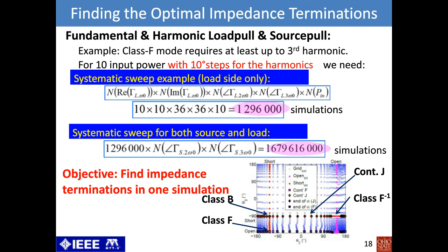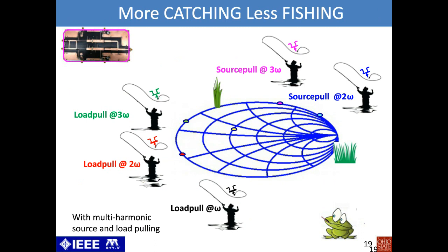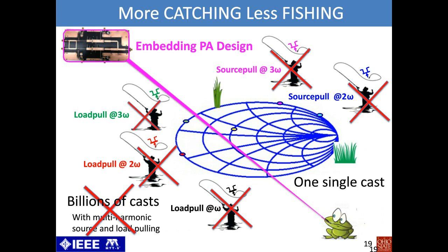For example, a plane showing the second harmonic phase on the x-axis and the third harmonic phase on the vertical axis — if we are looking for class B, this corresponds to a certain point, and it would be great if we didn't have to search the entire plane to locate that point. The traditional approach is to perform load pull at omega, 2-omega, 3-omega, and source pull at 2-omega and 3-omega — and source pull is very important since you can get 10% efficiency improvement. We would like to suppress these processes and, in a single simulation, come up with the optimal reflection coefficients. This can be achieved if we design the PA using embedding.